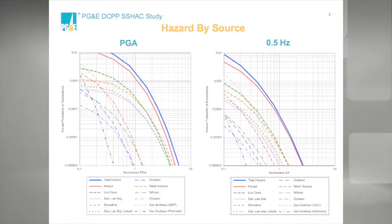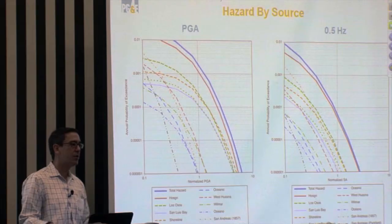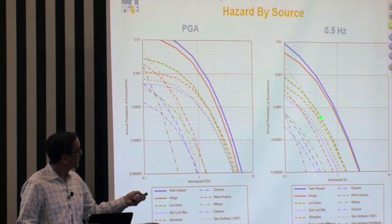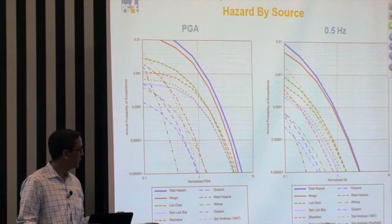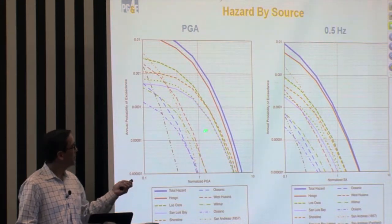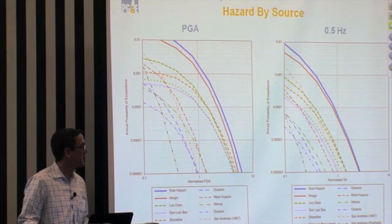The x-axis is a normalized ground motion value because we're not concerned specifically about absolute ground motion values at the 10 to the minus 4 level, but we're concerned about the relative contribution for all the sources. This is showing in both cases the contribution from individual fault sources, which are listed in the legend. And what jumps out especially for PGA is you've got a cluster of sources contributing basically most of the hazard at the site.